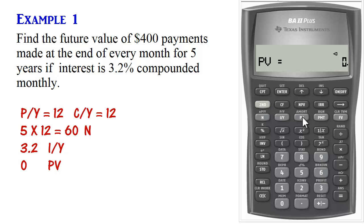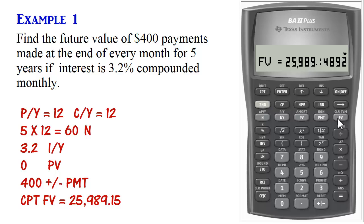And for the payments, we enter them as 400. I'll make them negative because money is going out. And then press Payment. And we compute future value. So the future value is $25,989.15. Let's look at another example.